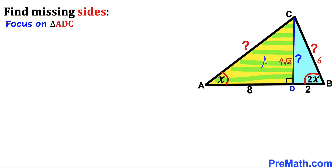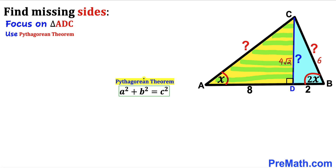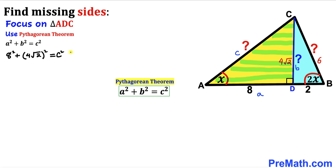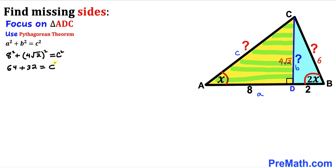Now let's focus on right triangle ADC, whose known side lengths are AD=8 and CD=4√2, with AC unknown. Applying the Pythagorean theorem again: 8² + (4√2)² = AC². This gives us 64 + 32 = AC², so AC² = 96.